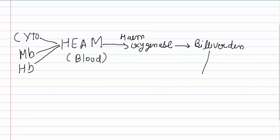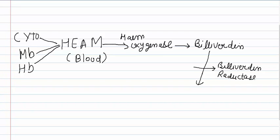Biliverdin is acted upon by another enzyme known as biliverdin reductase. This enzyme converts biliverdin into bilirubin.